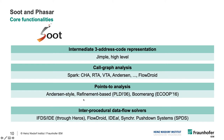Soot also has a number of points-to analyses integrated. There is the standard Anderson-style analysis, but also a refinement-based analysis contributed about 14 years ago, which allows you to refine results with additional context information. Ten years later, one of my PhD students, Johannes, came up with an analysis called Boomerang — a demand-driven analysis that you call only when you need precise pointer information, combining flow sensitivity with context sensitivity to a very large extent. It is one of the most precise analyses available at the moment.